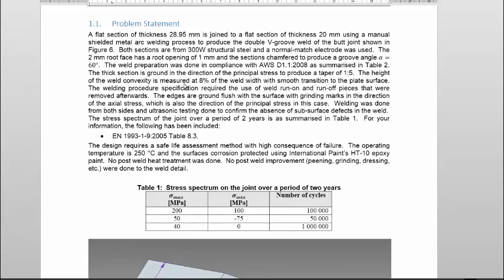So let's go through the problem statement. According to the problem statement, a flat section of thickness 28.95 mm is joined to a flat section of thickness 20 mm using a manual shielded metal arc welding process to produce the double V-groove weld of the butt joint shown in figure 6.